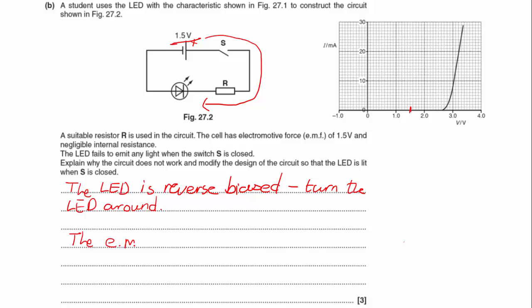So the EMF is too low, and this is the one where you would be able to modify the circuit and score the mark. And I would say if you were to add a second cell, that would get the circuit to work as long as you've turned the LED around the right way.